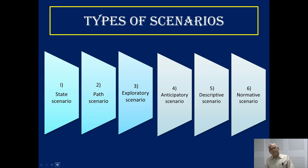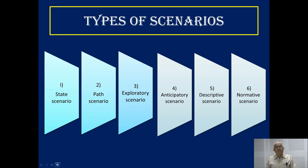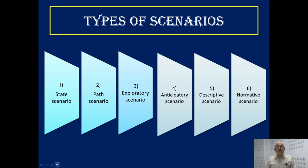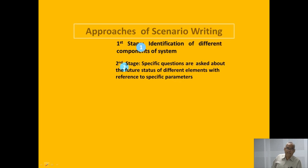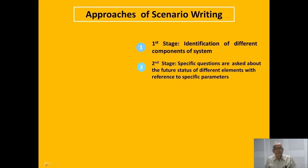The fifth one is the descriptive scenario, which is very close to the idea of the state scenario, but it describes both the state of the future and the path we will adopt to reach the future. The sixth one is the normative scenario, which says what should we prefer and how will we achieve our preferred future. What is valuable for us? Decision making will depend on resolving different value conflicts regarding our futures, and our futures vision will guide us to set futures values and futures orientation of our social and individual life.